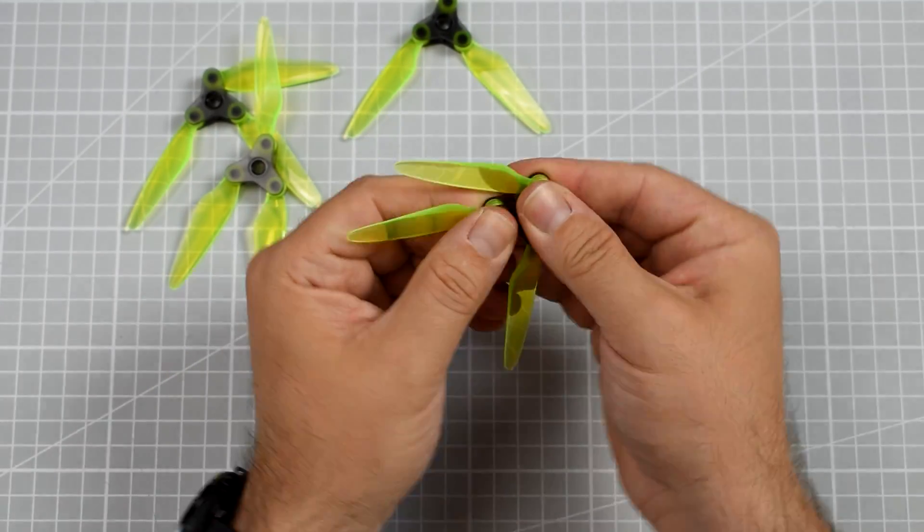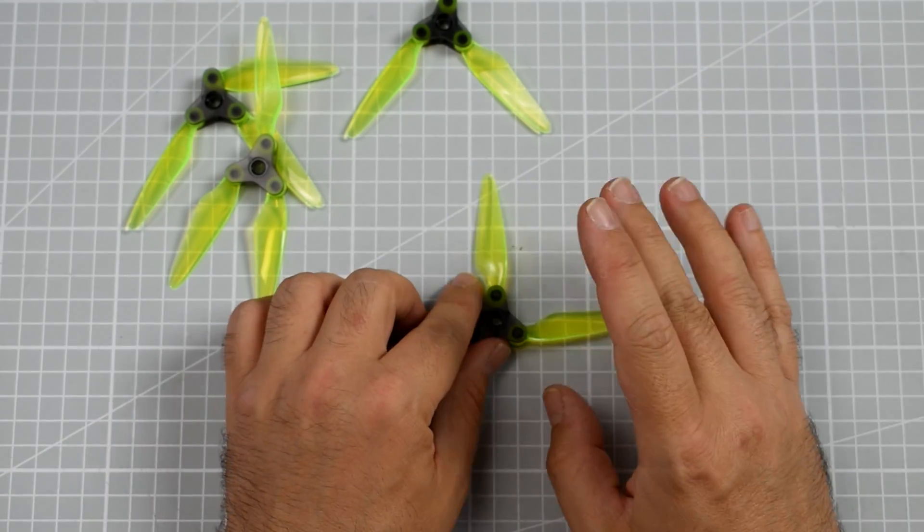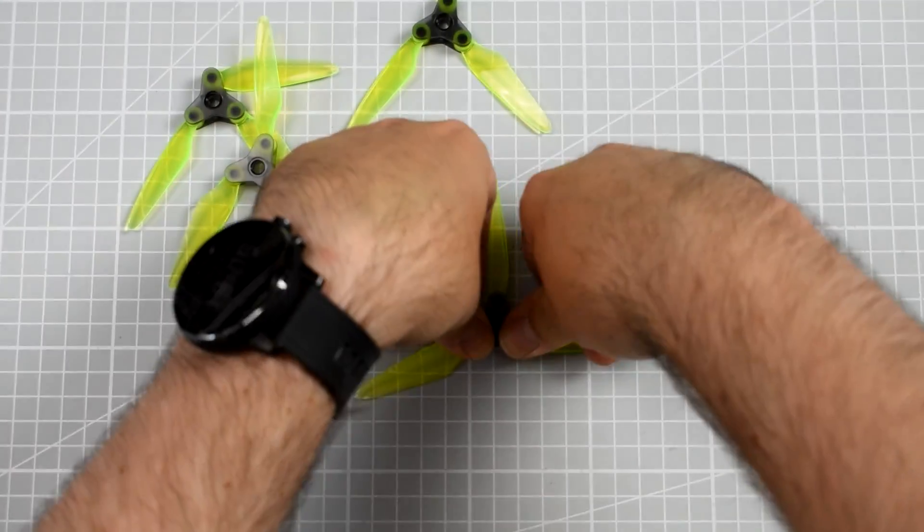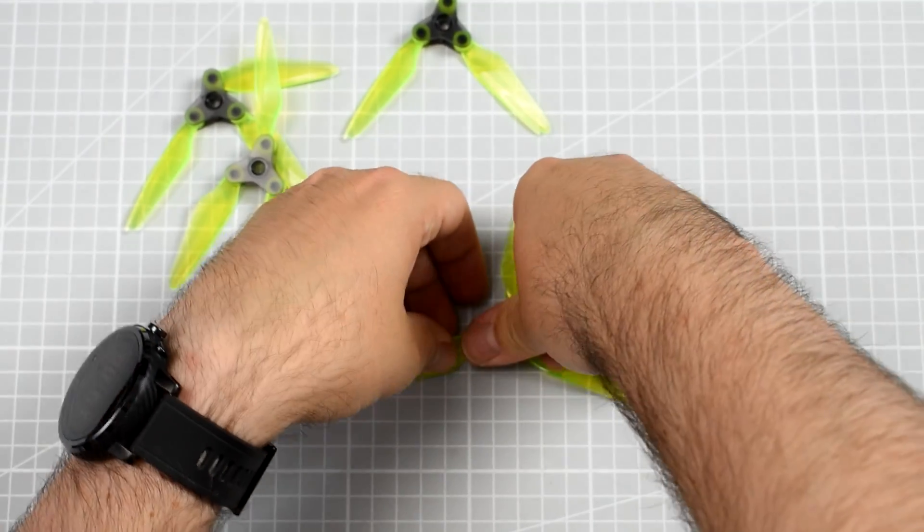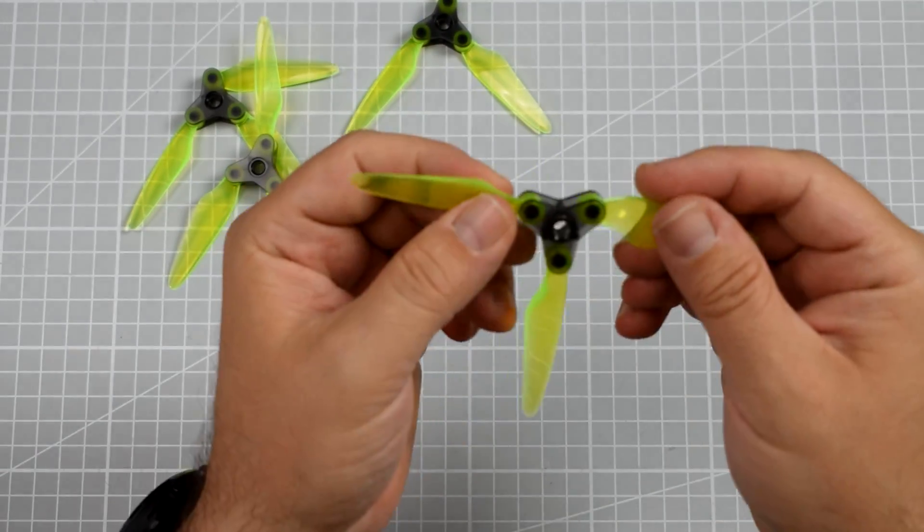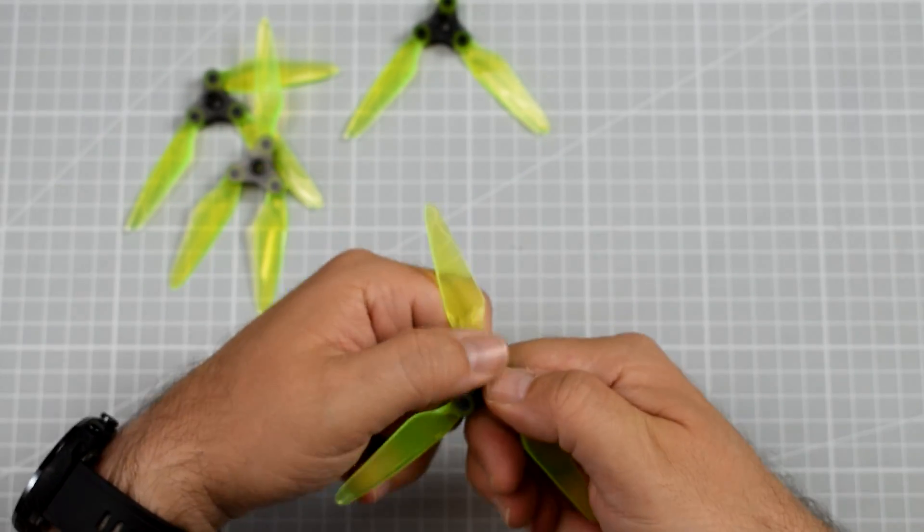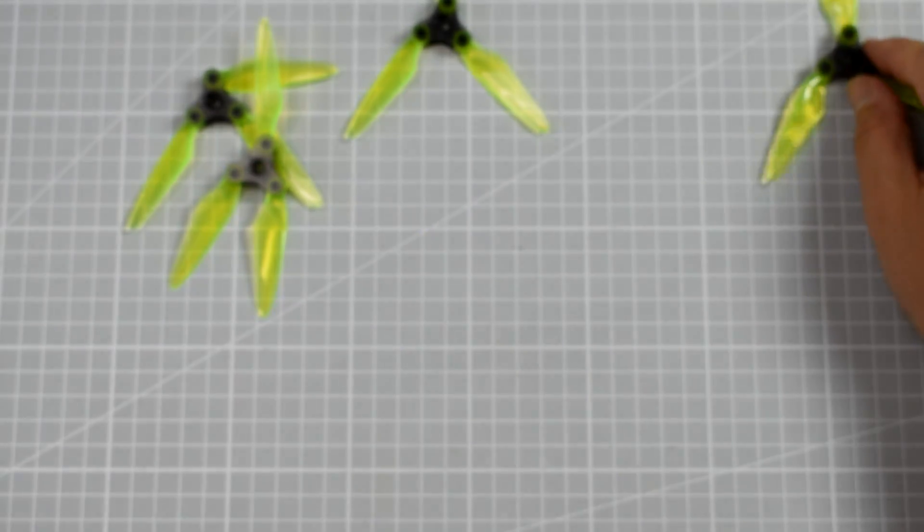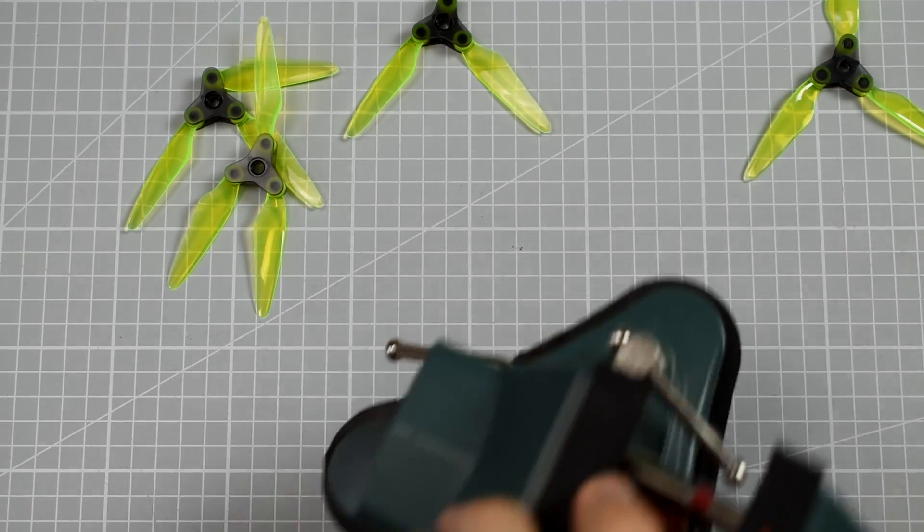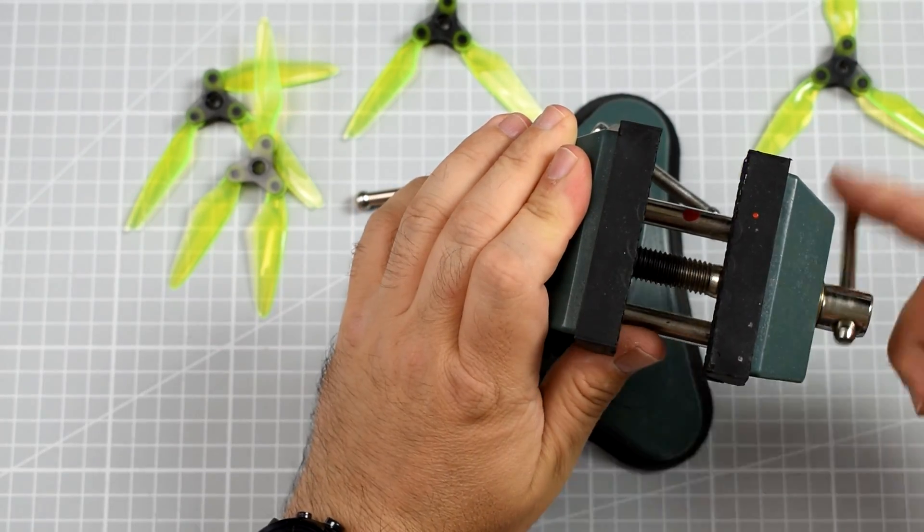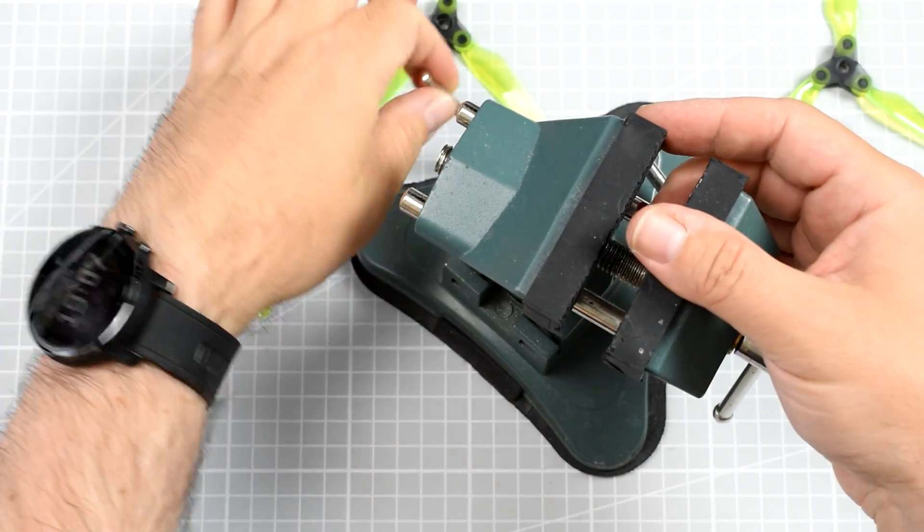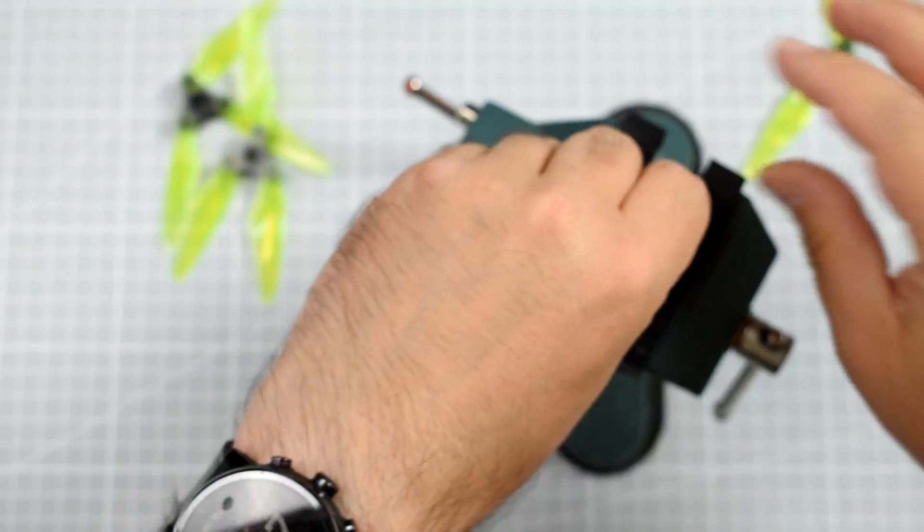All right, now we can squeeze them tight. You really have to squeeze them strongly. If you do not feel that you can do it with your hands, because it's not that simple, it really requires some strength, my advice is to use a vice with rubber jaws. You just take the propeller, squeeze it, and done.